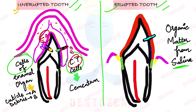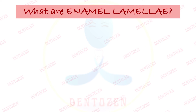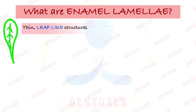Now let's see how to write this for your exam. First, the introduction: enamel lamellae are thin leaf-like structures — very important. Sometimes they are also described as sheet-like structures. They can be seen in ground sections, both longitudinal and cross or transverse sections, but they are best seen in cross section or transverse section.